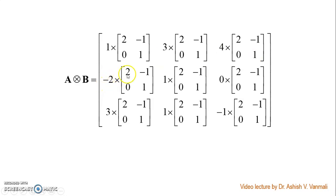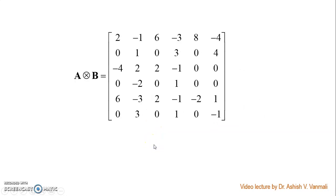Similarly, minus 2 will get multiplied by this value, so I will get minus 4, plus 2, 0, minus 2 and so on. This process has to be continued. Finally, we will get a result like this. This is my Kronecker product of A with B.